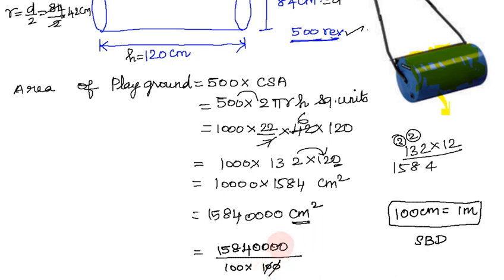So the two zeros cancel, and the two zeros cancel. Now we have 1584 centimeter square. So it is on the path. In the road roller, the total area is 1584 meter square.